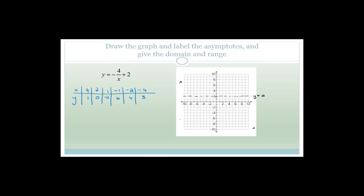Let's plot this. When x is four, y is one. When x is two, y is zero. When x is one, y is minus two. So the graph does something like that, but does not touch the asymptote. Then when x is minus one, y is six. When x is minus two, y is four. When x is minus four, y is three. You might be thinking why is she going through this with us — it's so easy and tedious — but it's amazing how many students don't know how to draw hyperbolas, which is why I'm going through this with you.